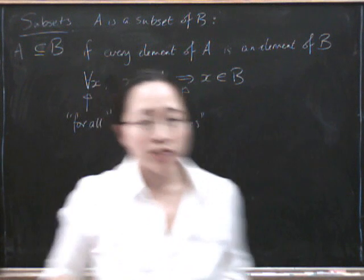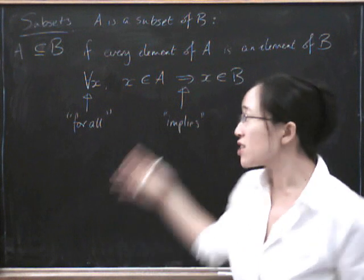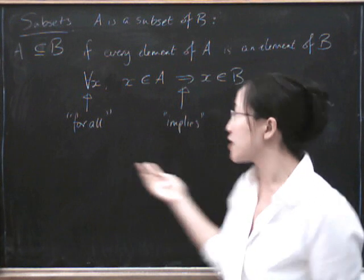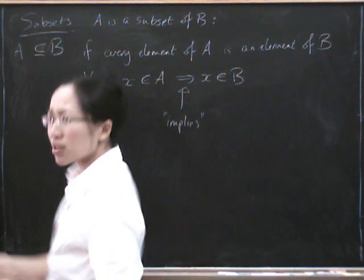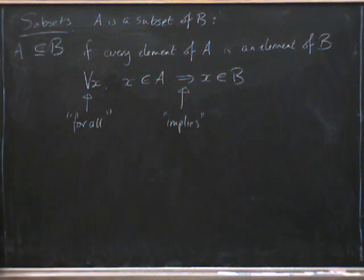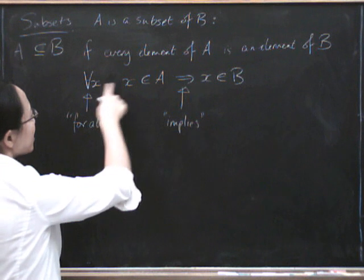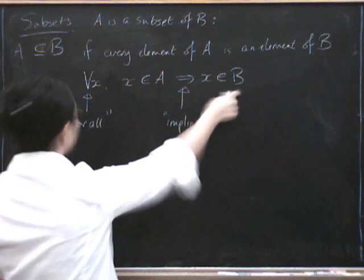When we use pieces of notation like this, they really are just shorthand for an actual word. It's just that these are words that we use so often when we're doing maths that we would get really bored if we had to write them out all the time. So, instead we use these pieces of notation. This says, we can now read this out. So the sentence: for all x, x is in A implies x is in B.